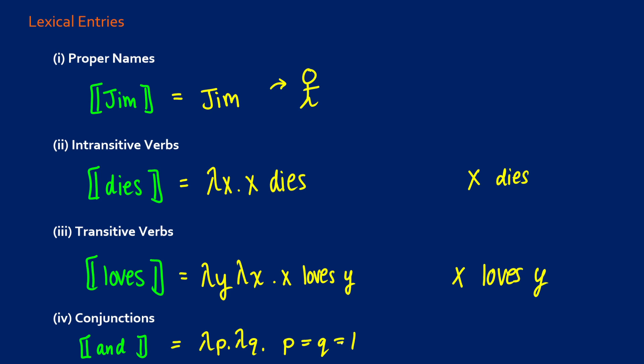We have two propositions p and q, and "and" is going to be true if both of those conjuncts are also true. So if p is equal to q is equal to one, that basically says they're both true. So this is like the sentence s and s.